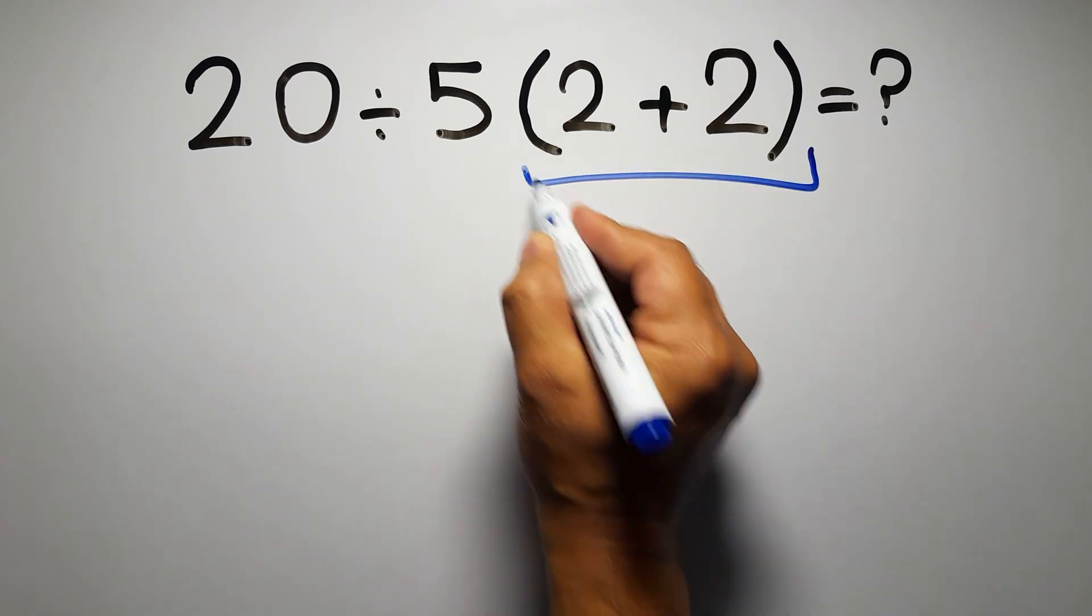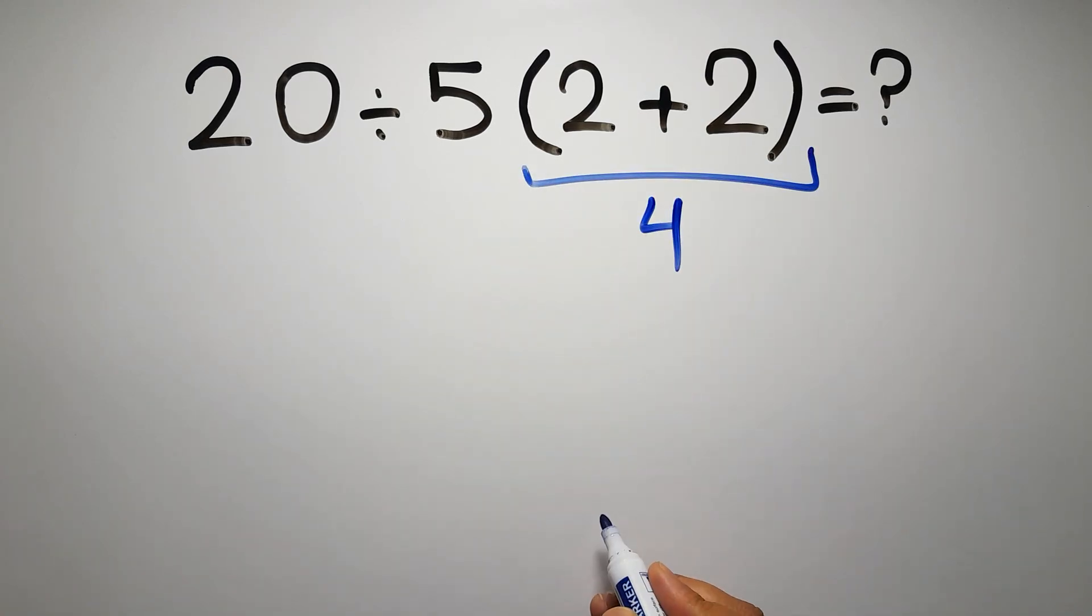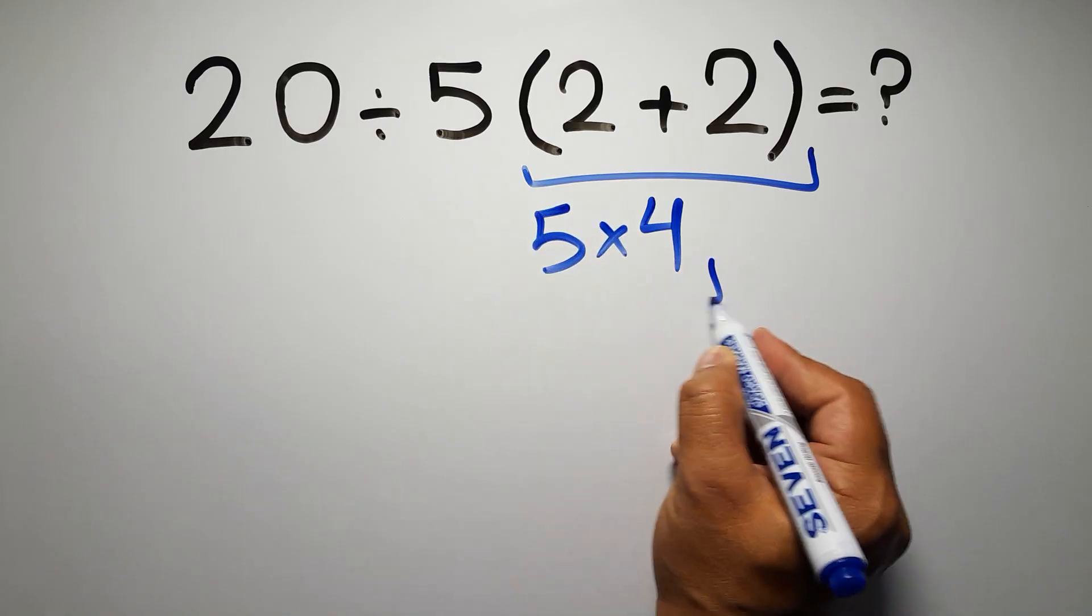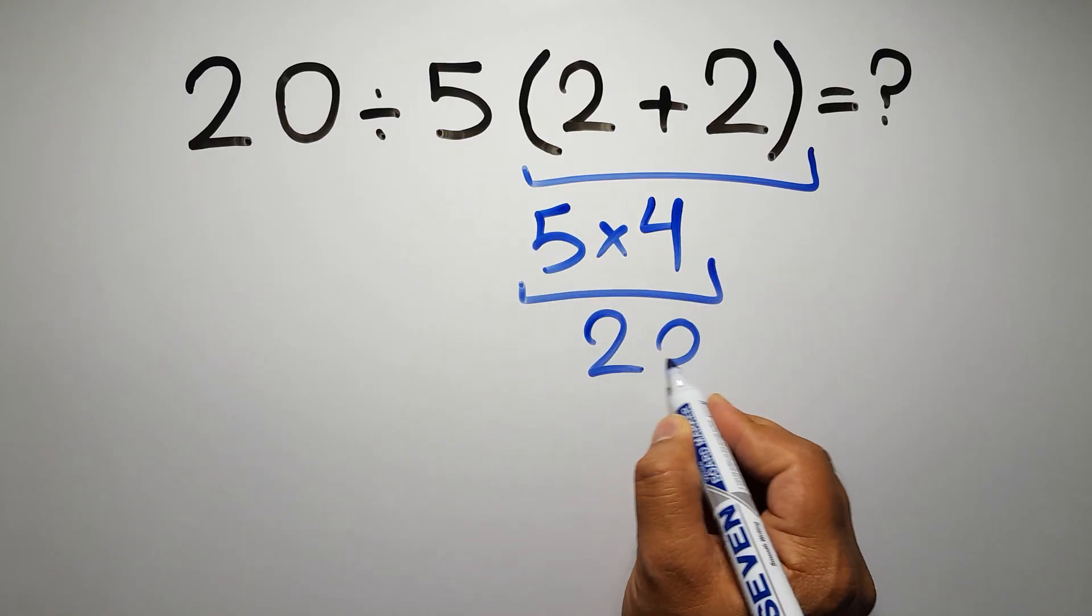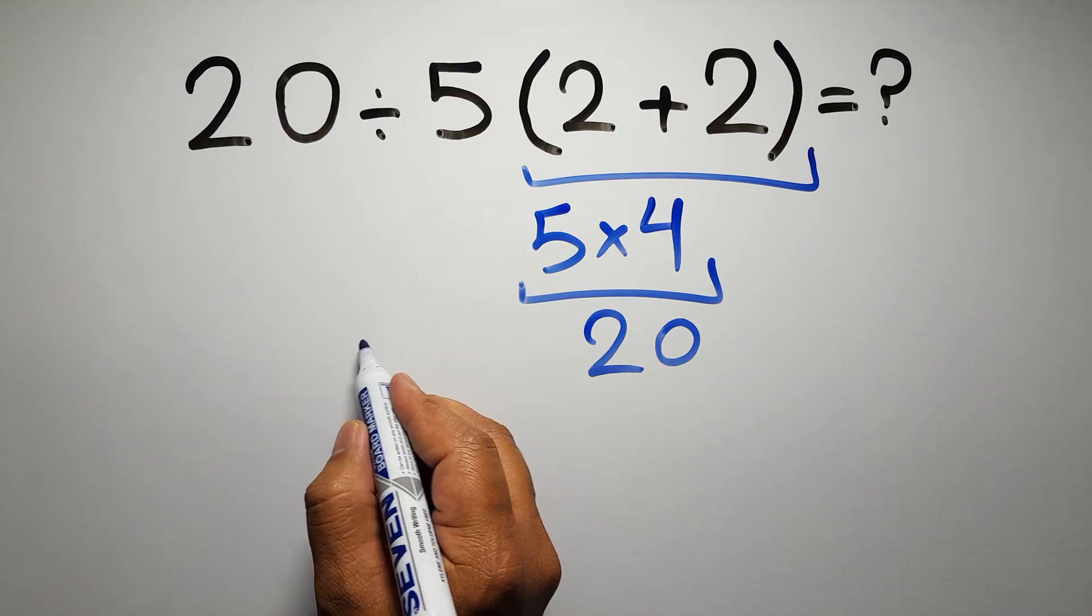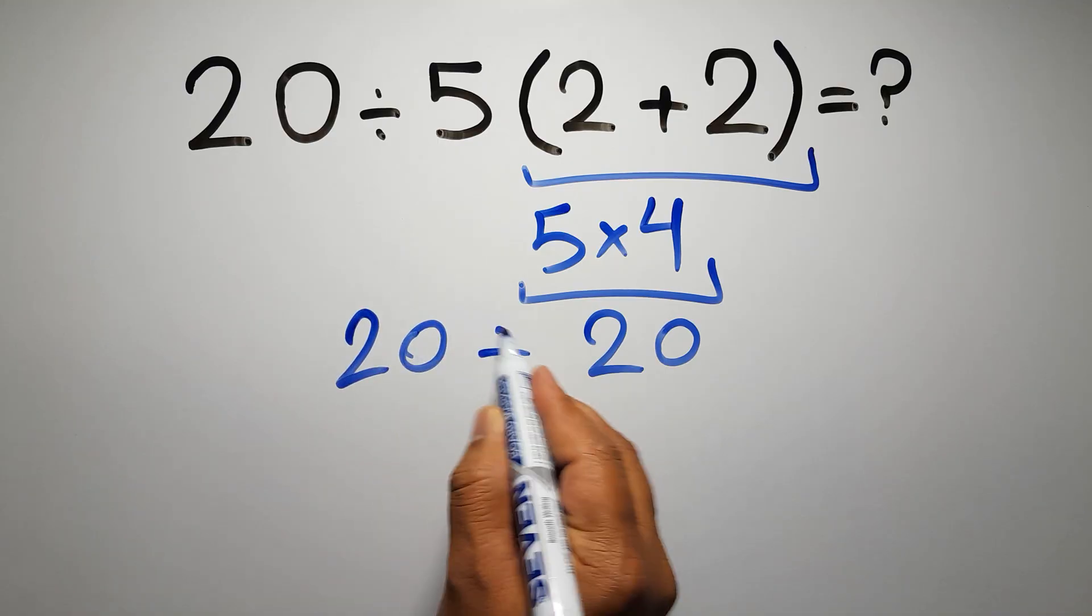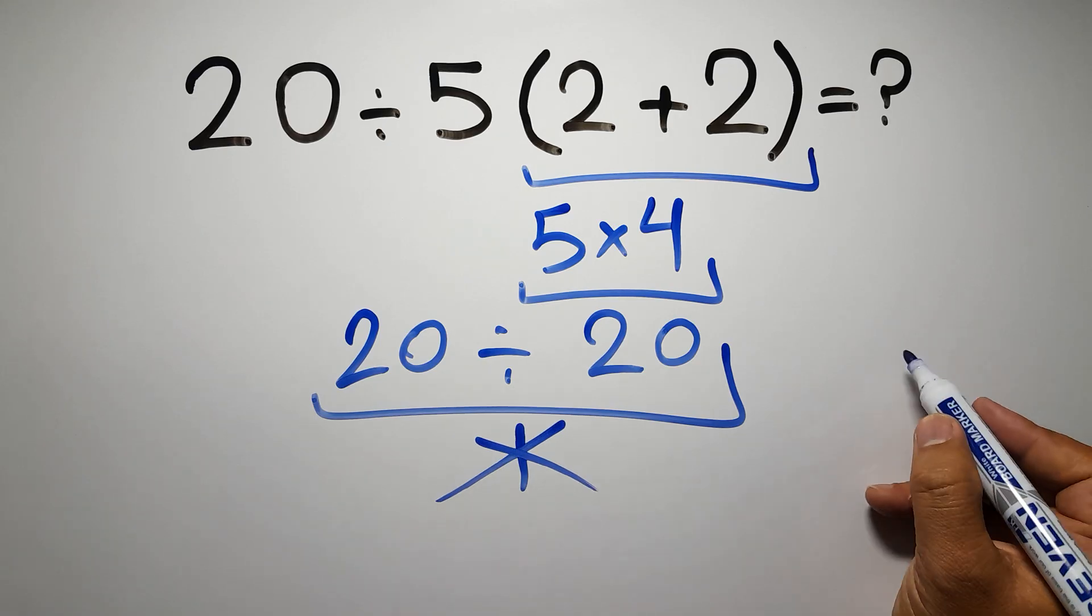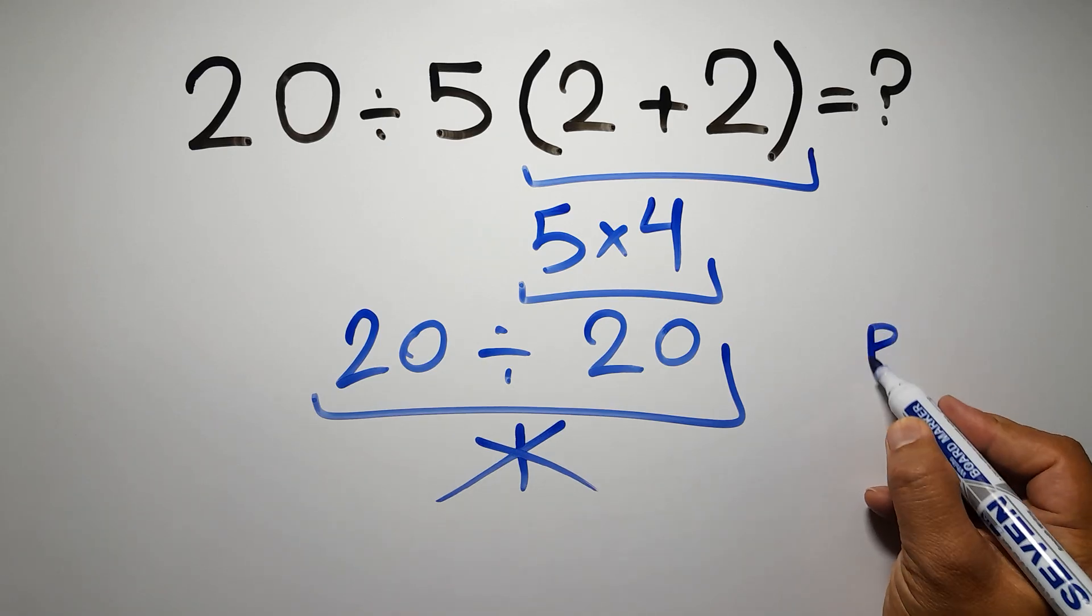2 plus 2 gives us 4, and 5 times 4 equals 20, so 20 divided by 20 which equals 1. But this answer is not correct because according to the order of operations, first we have to do parentheses, then